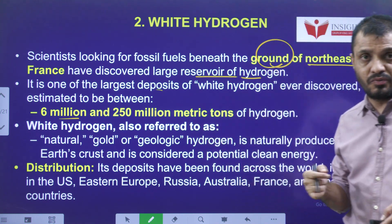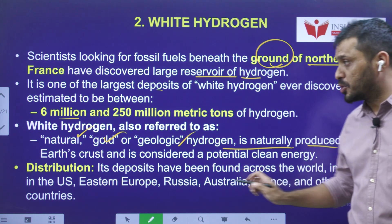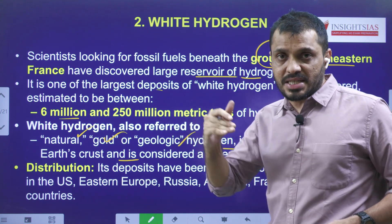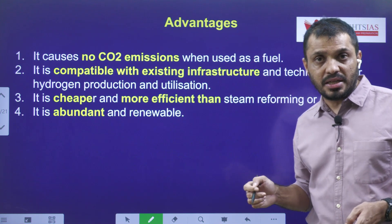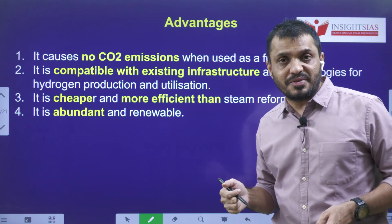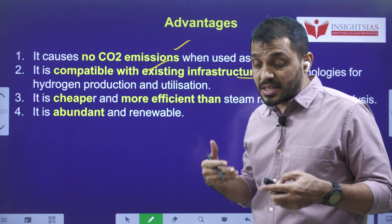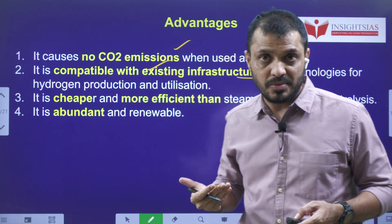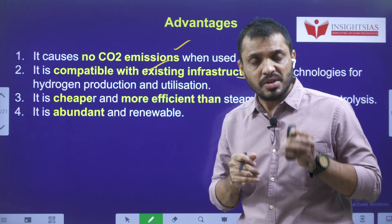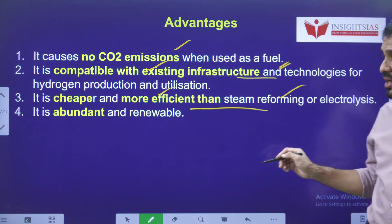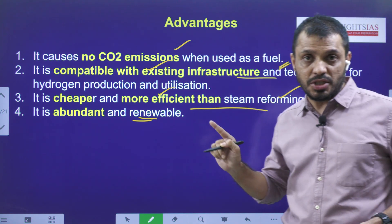White hydrogen is one of the cleanest energy sources because it does not produce any carbon when subjected to combustion. Popularly known as natural gold or geologic hydrogen, it is naturally produced in the Earth's crust and has considerable potential for clean energy production. Its advantages include: no carbon emissions, compatibility with existing infrastructure — meaning no new infrastructure is needed — it is cheaper and more efficient than steam, and it is abundant and renewable.